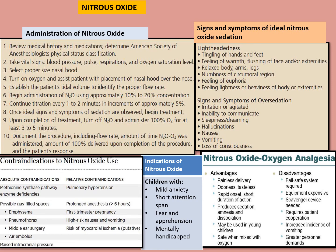Nitrous oxide is a very important topic for exams. Signs and symptoms of ideal nitrous oxide sedation start with tingling of the hands and feet and feeling warm and relaxed, but over-sedation can cause the patient to become irritated, unable to communicate, sleepy, with hallucinations, nausea, and vomiting. Children with mild anxiety, short attention spans, or who are apprehensive — nitrous oxide is a very good drug to calm them. There are absolute and relative contraindications: first-trimester pregnancy can lead to abortion, and pulmonary hypertension is a relative contraindication.